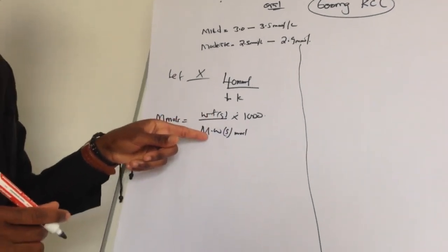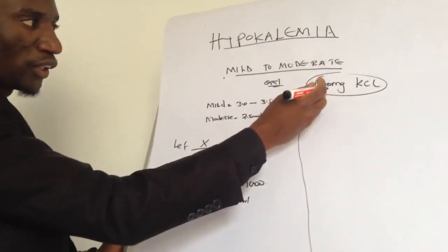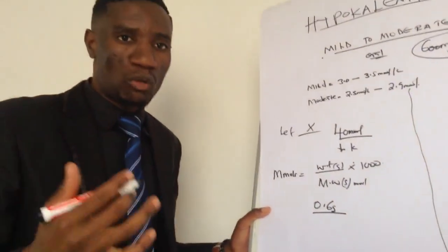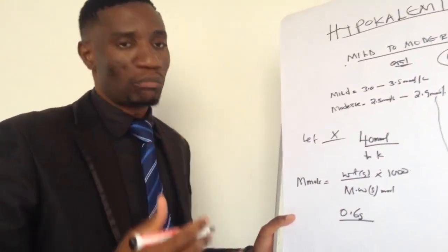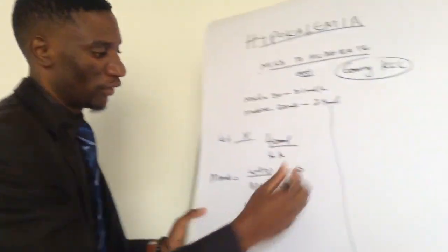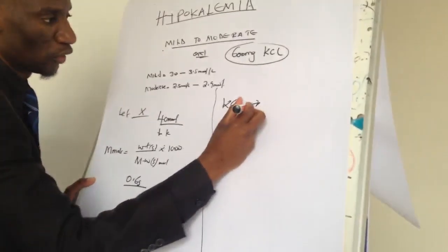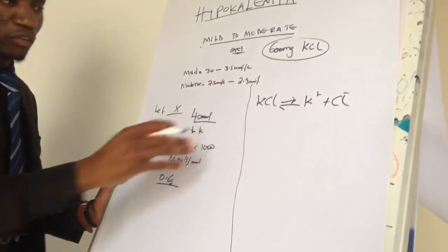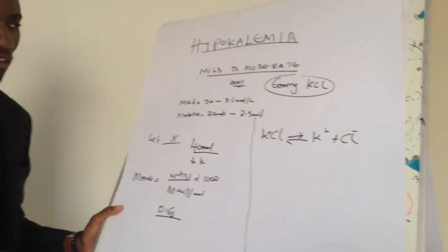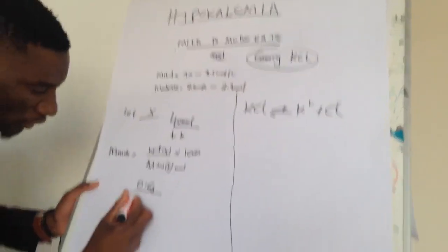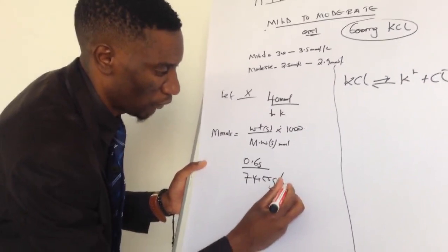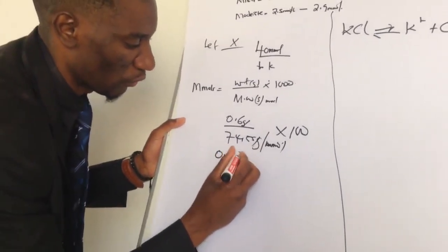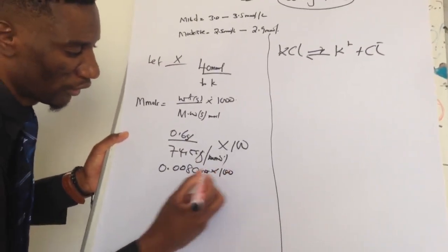The weight here is 600 mg of potassium chloride, which equals 0.6 grams. The molecular weight is the sum of the atomic masses of the two atoms in potassium chloride: chlorine has an atomic mass of 35.45 and potassium is 39.1, giving a total molecular weight of 74.55 g/mol. So: 0.6 ÷ 74.55 × 1000 = 0.00805 moles × 1000.